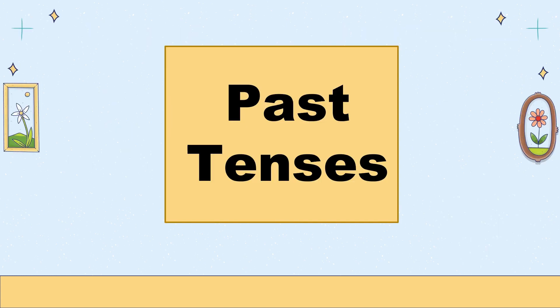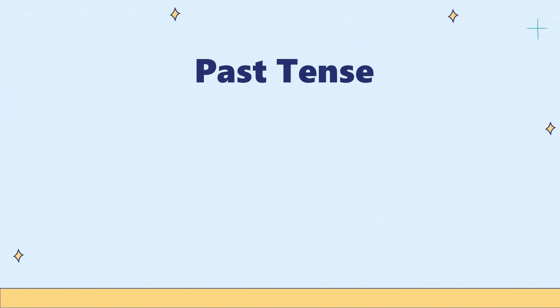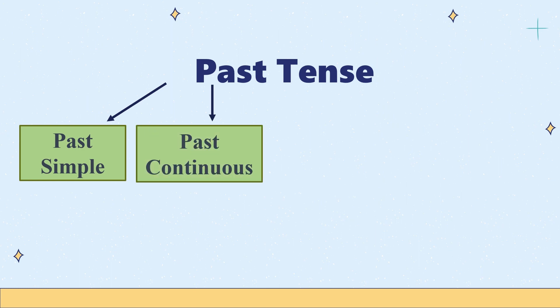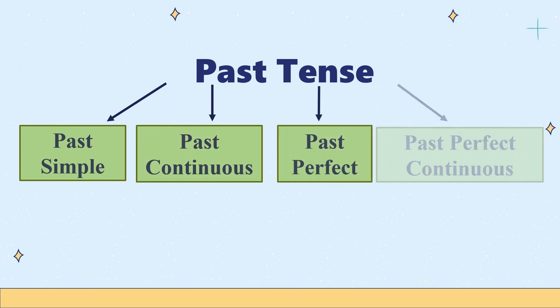Now let's move on to past tenses. Past tenses are also divided into four categories: past simple, past continuous, past perfect, and past perfect continuous.